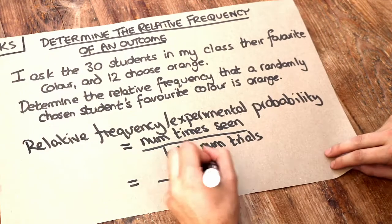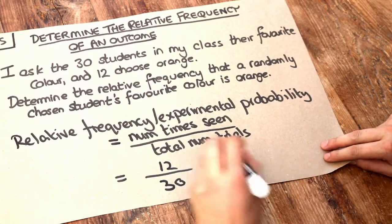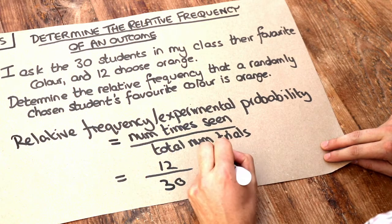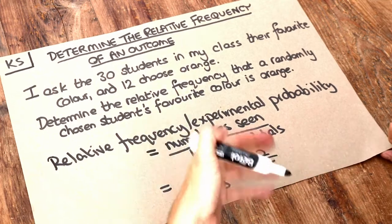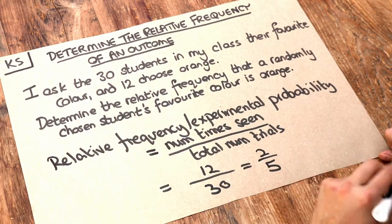And we could simplify that fraction if we wanted. If we divide them both by 6 we just get 2 over 5. And that's just saying we expect someone to pick orange 2 fifths of the time.